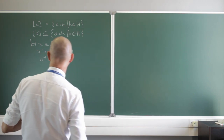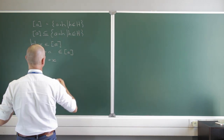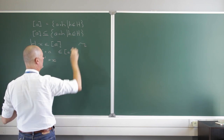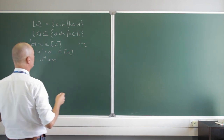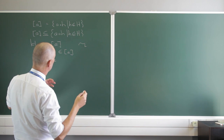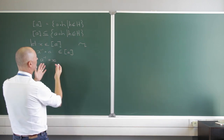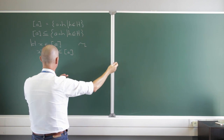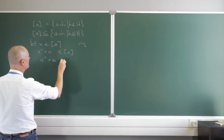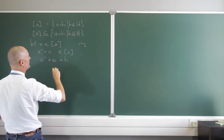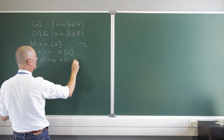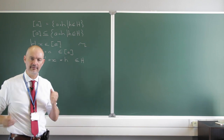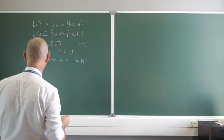I defined this relation such that A inverse composed with X must be an element of H. So let's choose an arbitrary element in H and say A inverse X equals h, for some h ∈ H. That's quite legitimate because that is how I defined my equivalence relation.